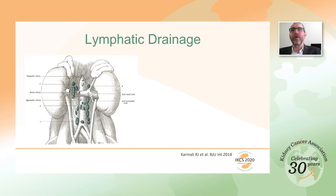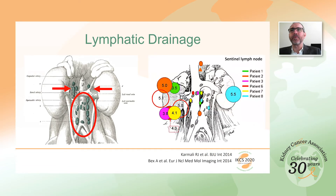The kidneys drain first through the lymph nodes in the renal hilum, and from there to the lymph nodes around the aorta and inferior vena cava. Studies performed in patients with kidney cancer using lymphoscintigraphy and SPECT imaging to detect the sentinel lymph node intraoperatively confirm that for most tumors, the sentinel lymph node is indeed in these locations. Here you can see the same color for the primary tumor and the sentinel lymph node.